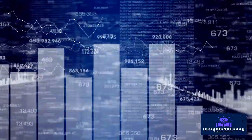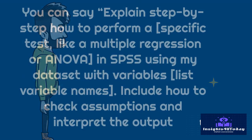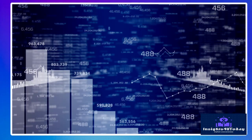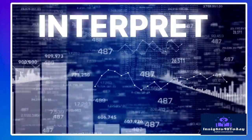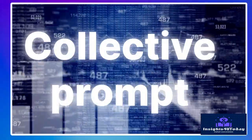You can prompt ChatGPT or Claude AI to tell you what statistical test to use to test a specific hypothesis, and even the steps you should follow to carry out an analysis on SPSS. For example, you can say: explain step-by-step how to perform a specific test, like multiple regression or ANOVA, in SPSS, using my dataset with variables — then list your variable names. Include how to check assumptions and interpret the output. You can also prompt ChatGPT to interpret the results table by table, or give a collective prompt.